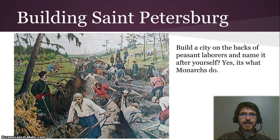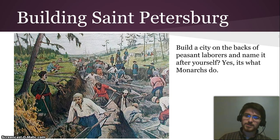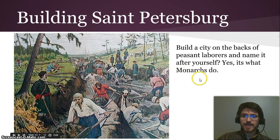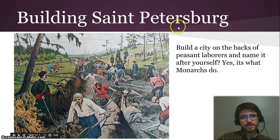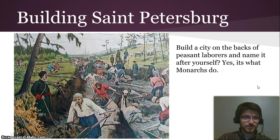On the negative side of absolute monarchs, Peter the Great built the city of St. Petersburg, killing thousands and thousands of people in the process because he built his city on the backs of peasant laborers, and then named it basically after himself — because that's what monarchs do. With all the power, why not name things after yourself?